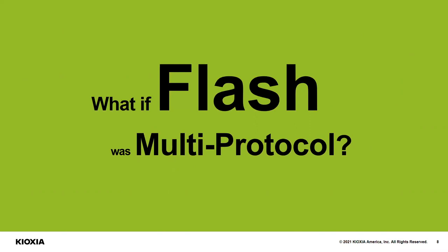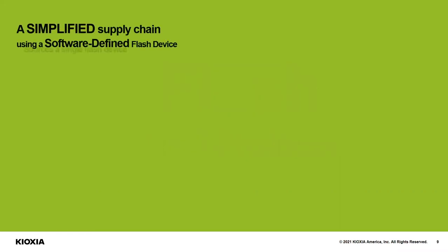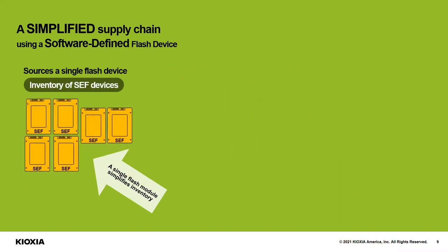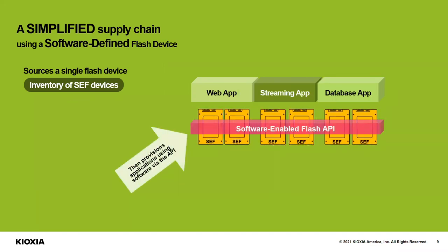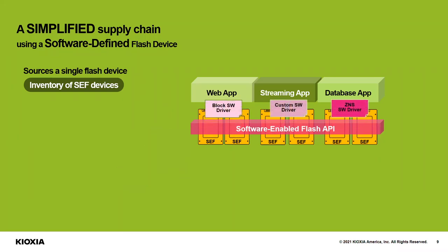What if we could make Flash — that digital storage mechanism — software-defined and allow it to be a multiple-protocol type of device? With a simplified supply chain, we can source a single base Flash device — a software-enabled Flash device — in inventory. We can then deploy that device anywhere in the data center for any application and bring in that software-enabled Flash API. Once we have that API, we can define how that storage is going to work using different software drivers to define the protocol per application.